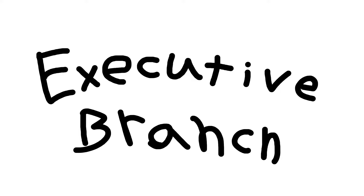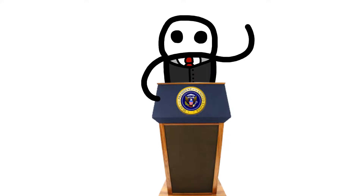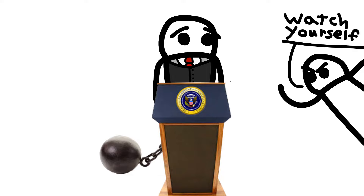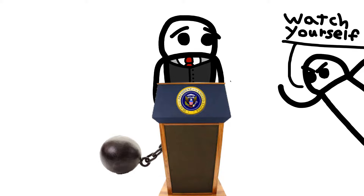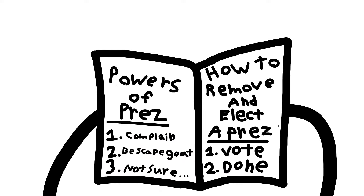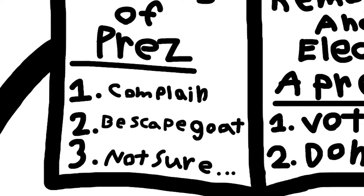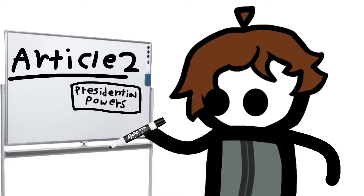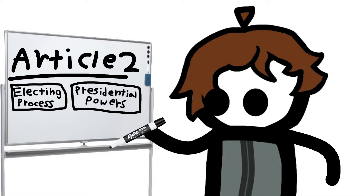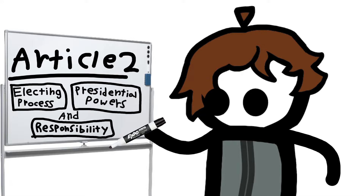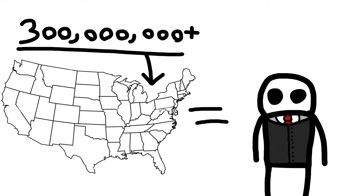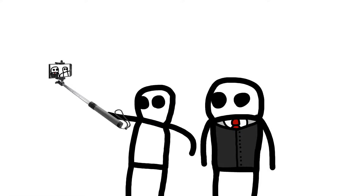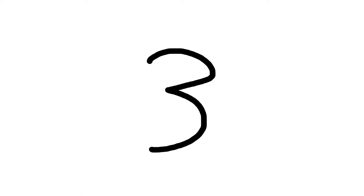Article 2: The Executive Branch. The Executive Branch is the branch the President of the United States holds, and obviously they can't do whatever they want with unchecked power. This article is dedicated to going through the powers the President holds and the procedures of removing them from office or electing someone new. Along with powers and the electing process, this article also explains the responsibilities of a President, as you represent all 300 million plus people in the United States, giving you a lot of public influence that the Legislative Branch doesn't have.